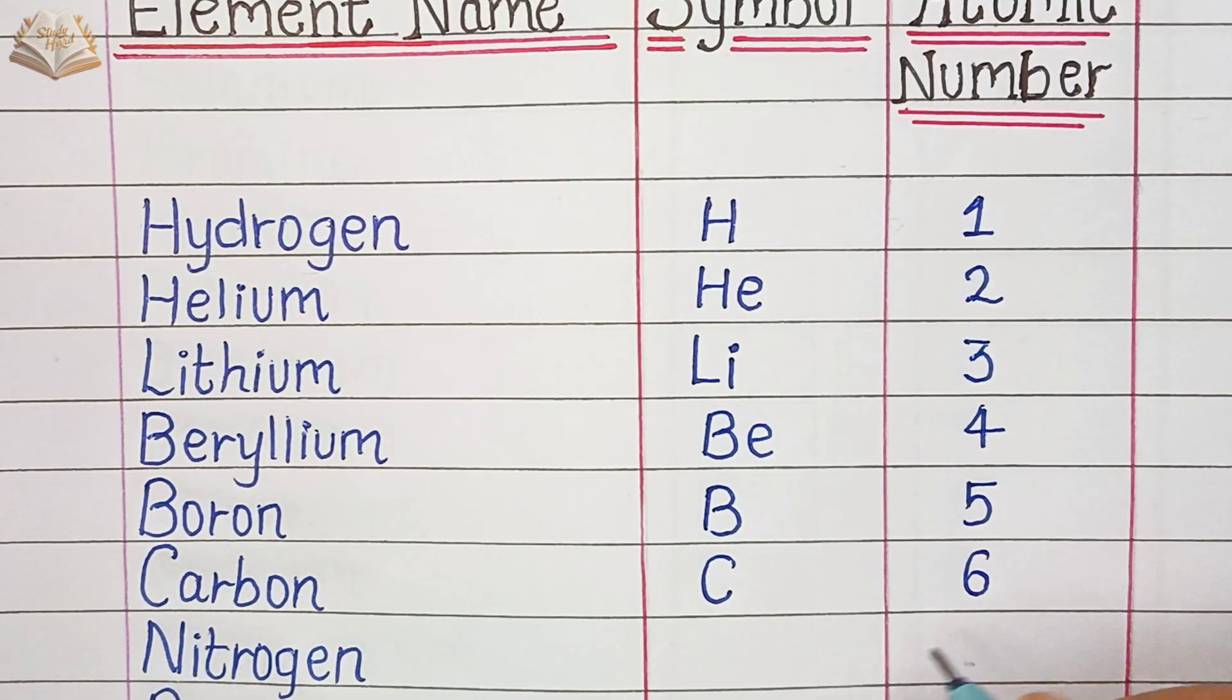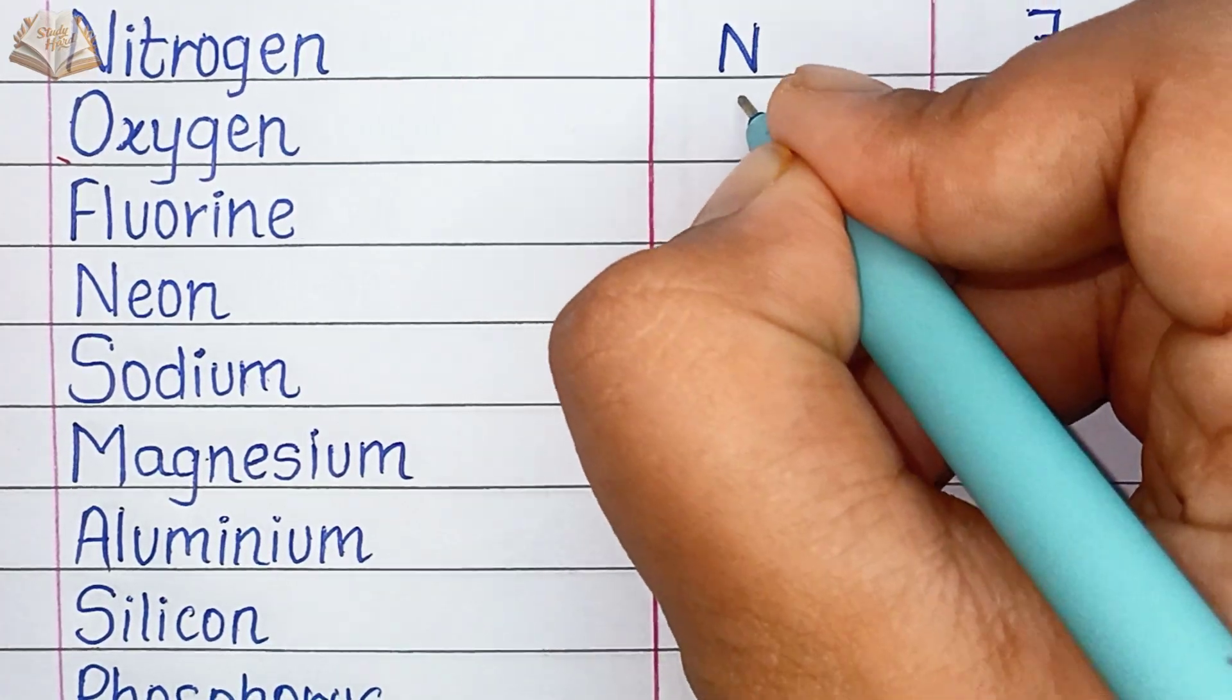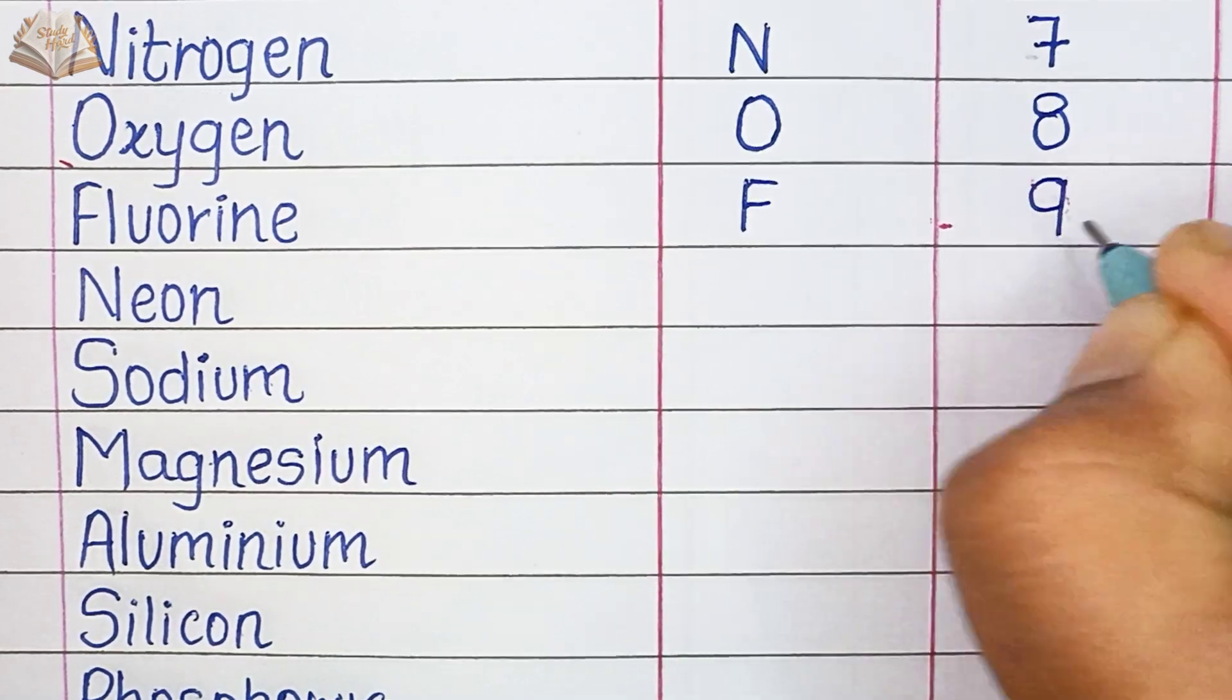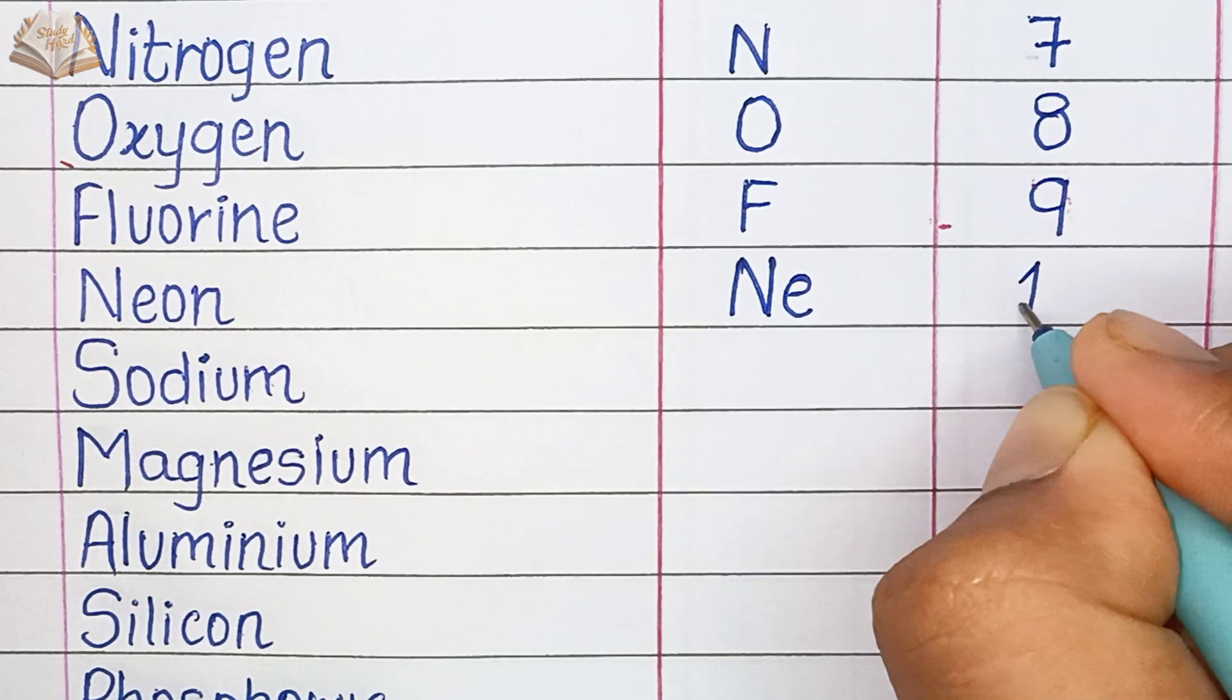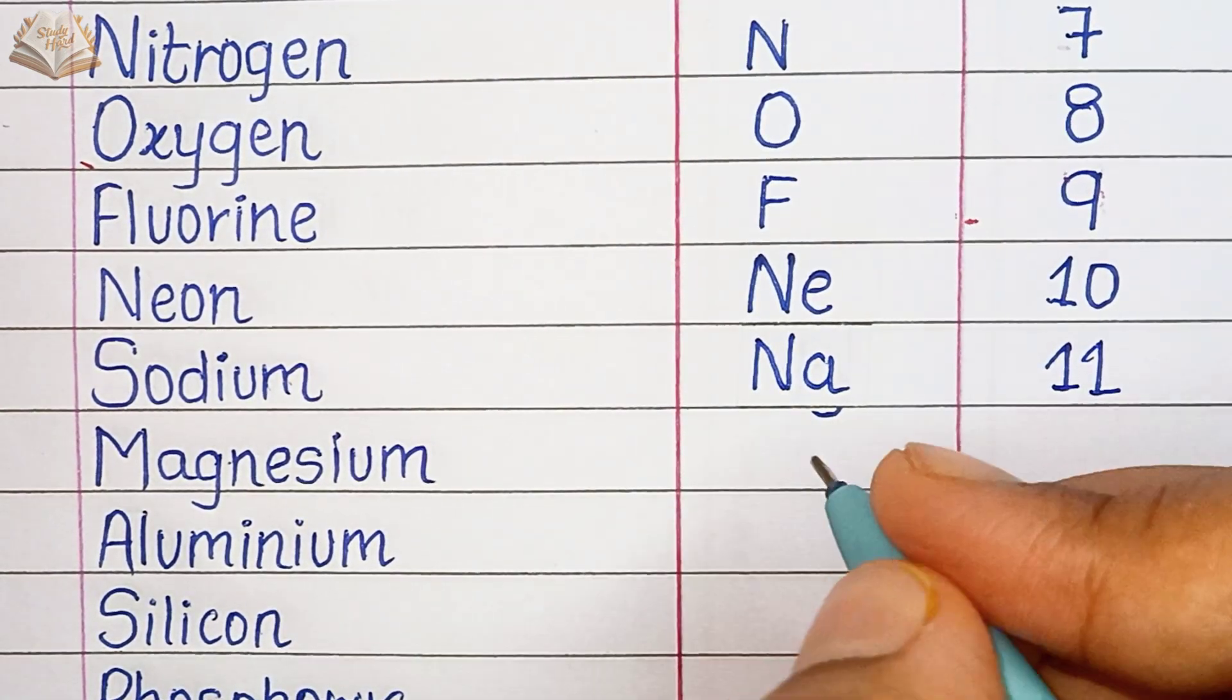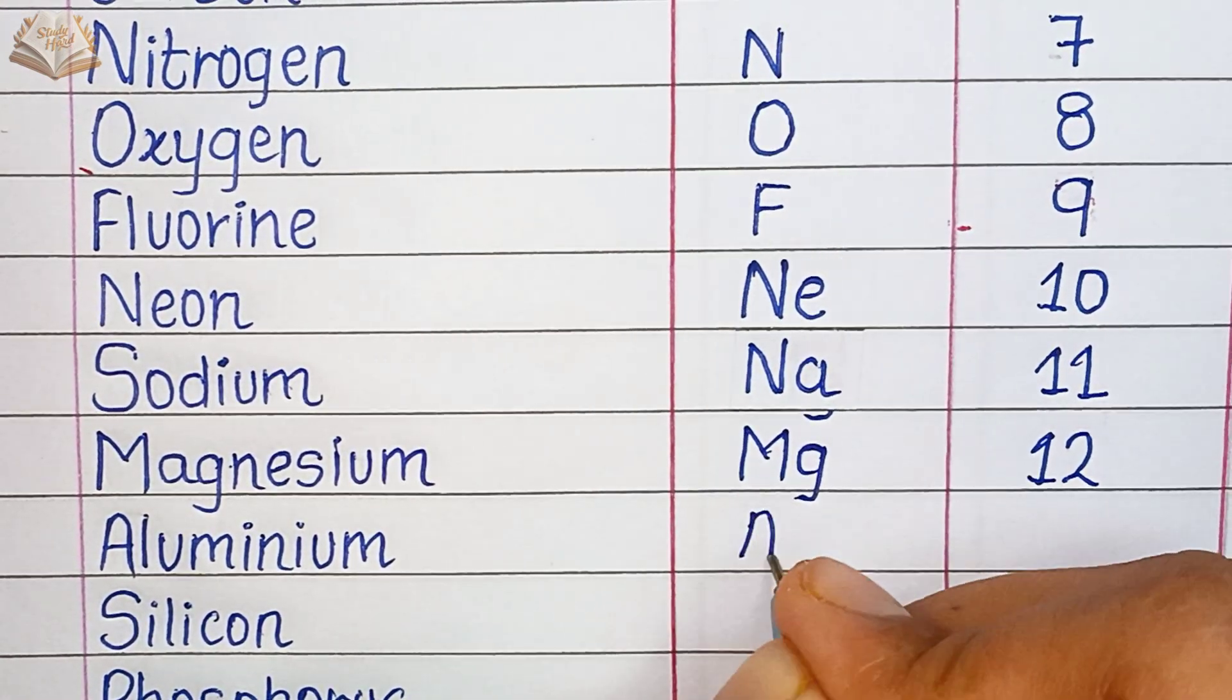Nitrogen, symbol N, atomic number 7. Oxygen, O, atomic number 8. Fluorine, symbol F, atomic number 9. Neon, Ne, atomic number 10. Sodium, Na, atomic number 11. Magnesium, Mg, atomic number 12.